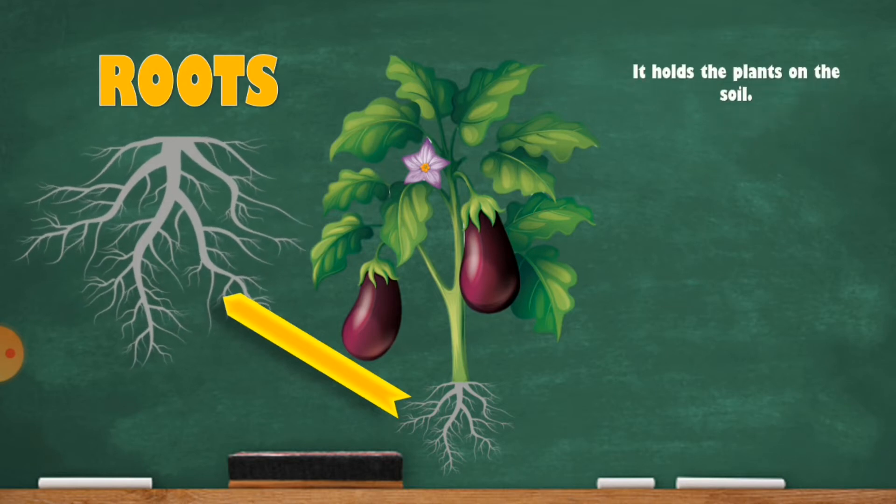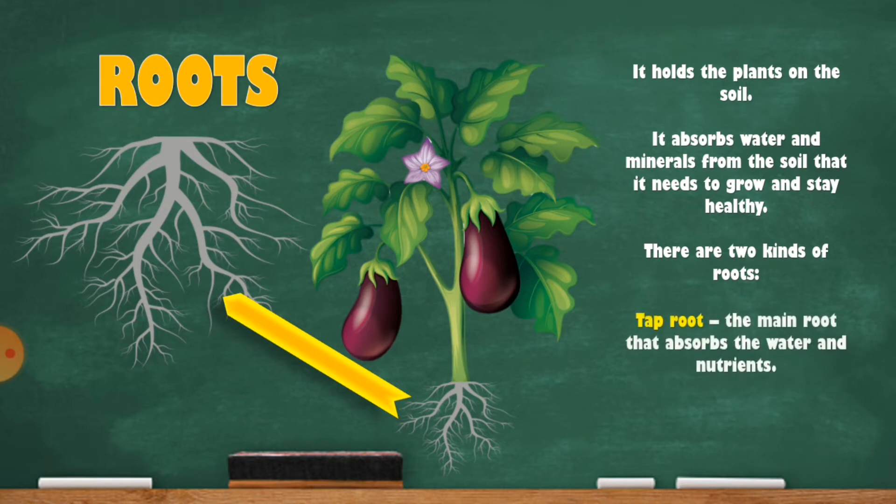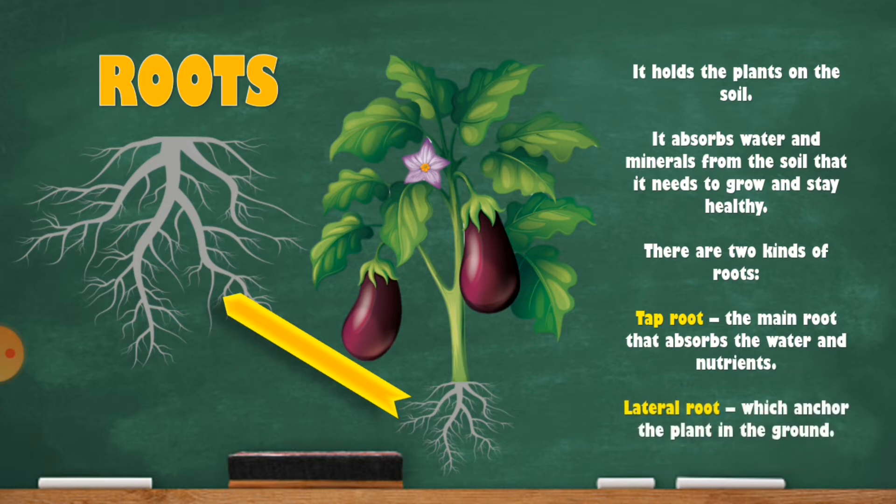It holds the plants on the soil. It absorbs water and minerals from the soil that it needs to grow and stay healthy. There are two kinds of roots: taproot, the main root that absorbs the water and nutrients, and lateral root, which anchors the plant in the ground.